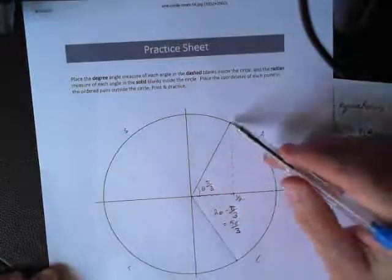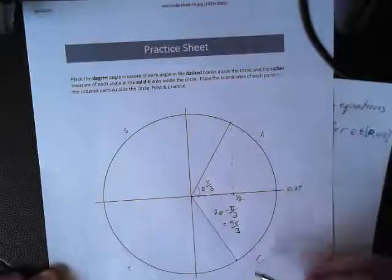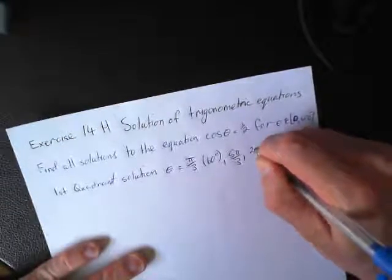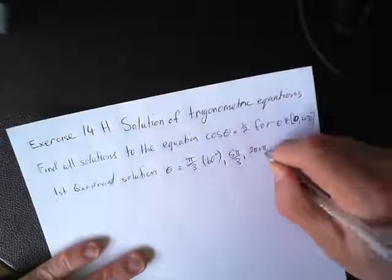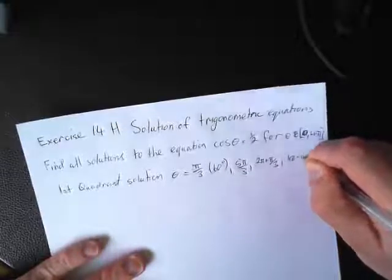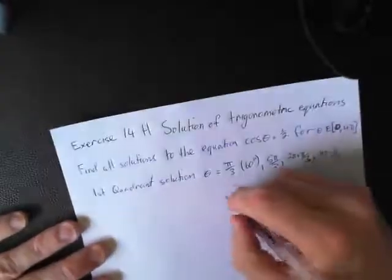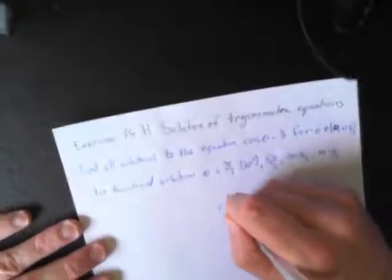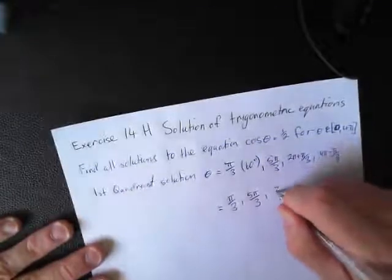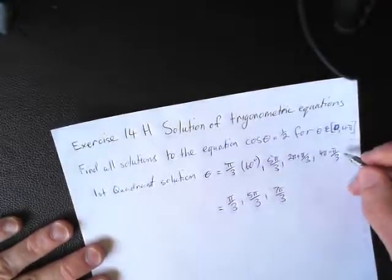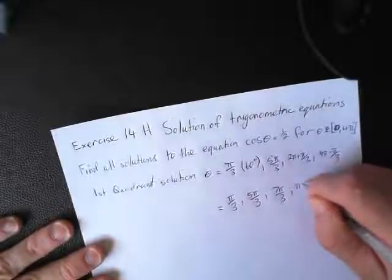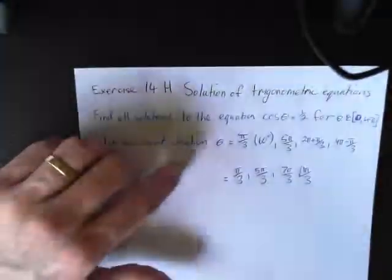So, in a second revolution of the circle, then we're going to have one solution here, and one solution here. Our next solution is 2 pi plus pi on 3. And our other solution is 4 pi minus pi on 3. Our four solutions are pi on 3, 5 pi on 3, 2 pi plus pi on 3 is 7 pi on 3, and 4 pi minus pi on 3, which is 11 pi on 3.